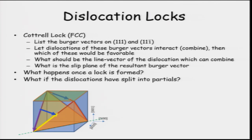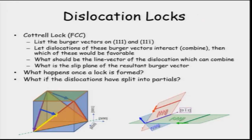This is a dislocation with a Burgers vector that we are familiar with in FCC, but unfortunately it lies on a plane which is not {111} — it is (001). What will happen? This dislocation will not be able to move. The two dislocations that came together combined and formed a dislocation whose Burgers vector lies on a plane on which it cannot glide. Therefore, it becomes a lock.